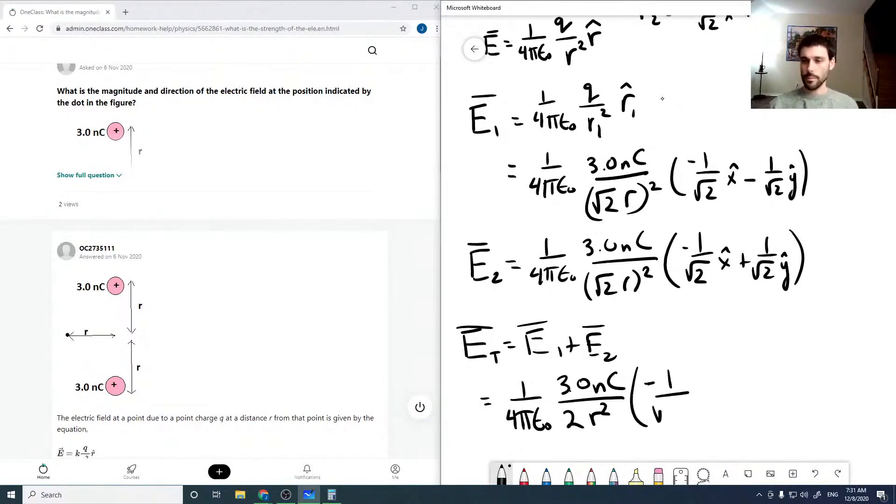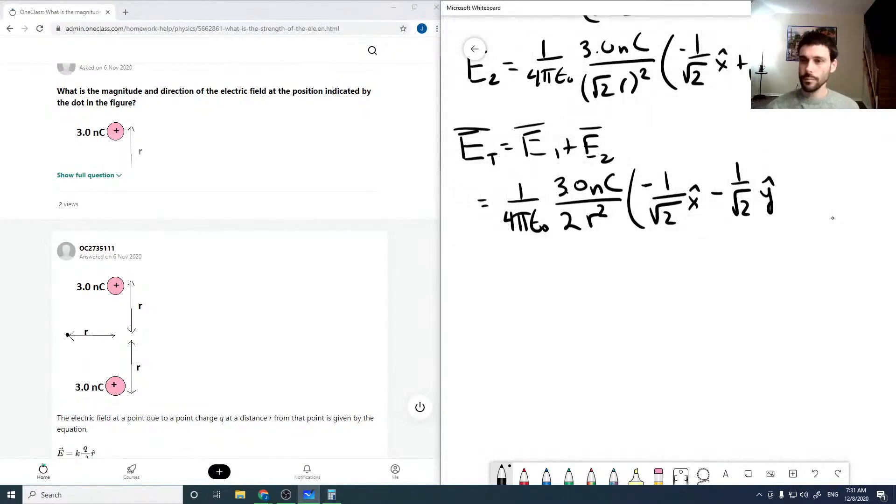And then the vectors are going to add up: 1 over root 2 x hat minus 1 over root 2 y hat minus 1 over root 2 x hat plus 1 over root 2 y hat. Obviously the minus here and the minus here are going to cancel, and the x hat will double up.